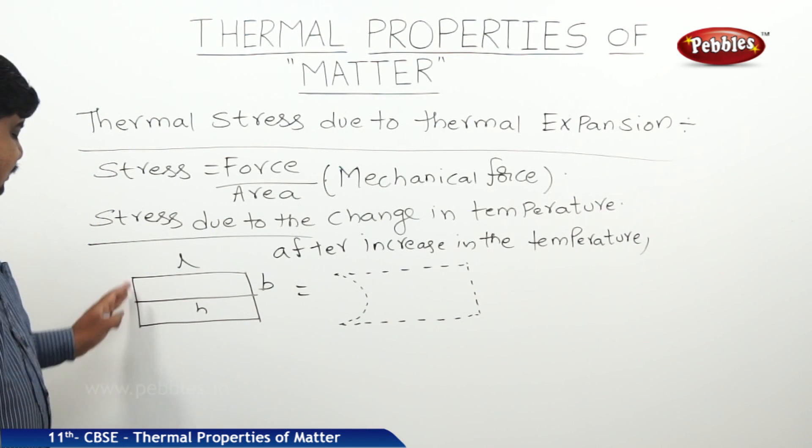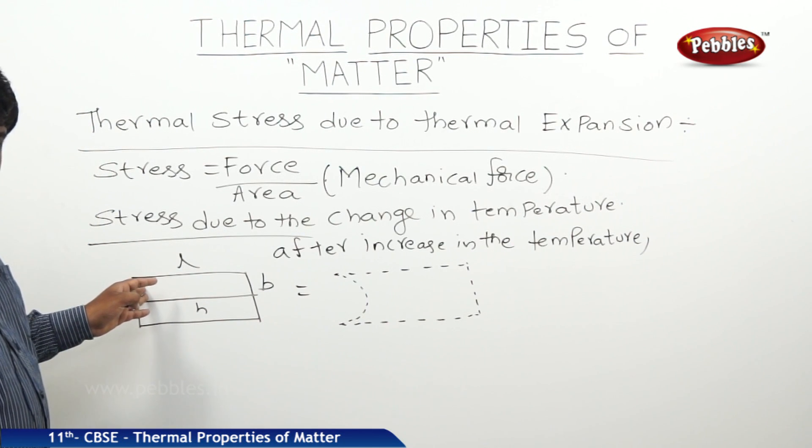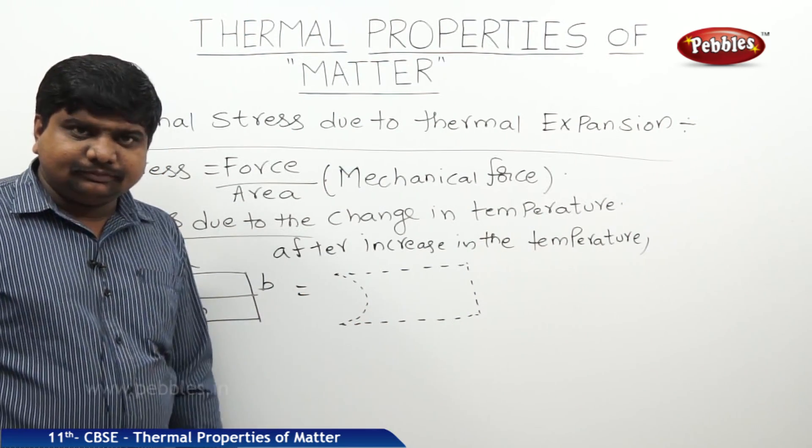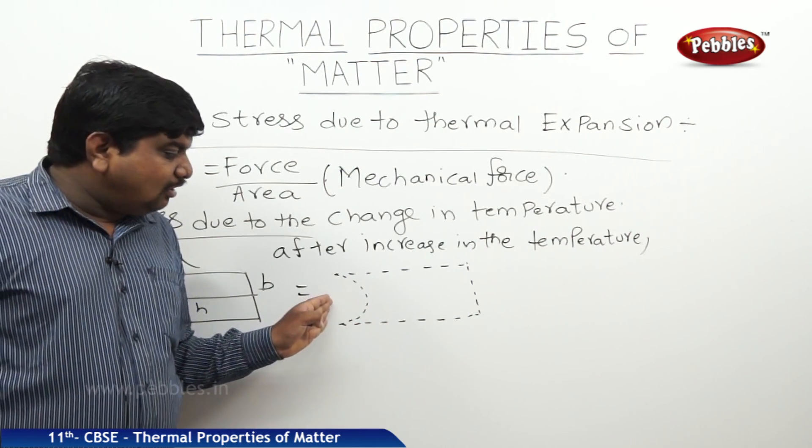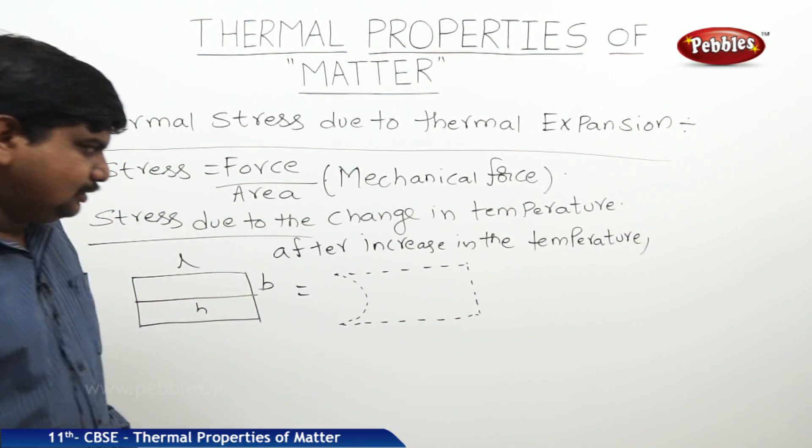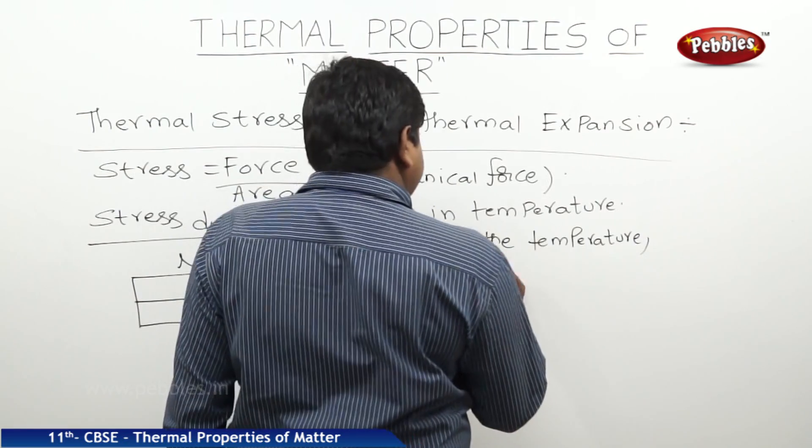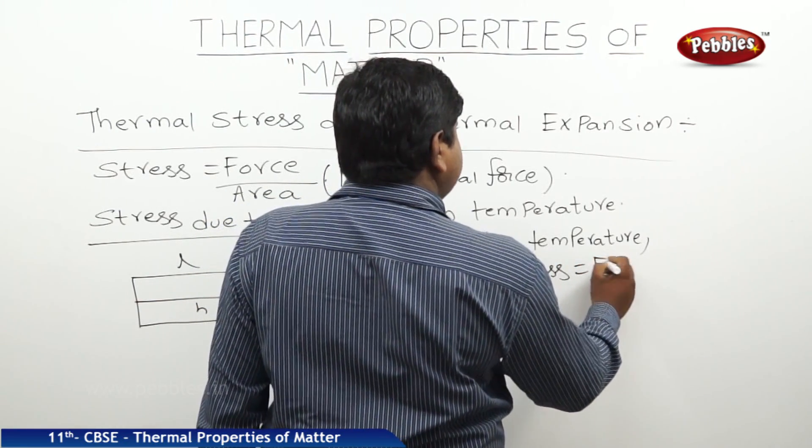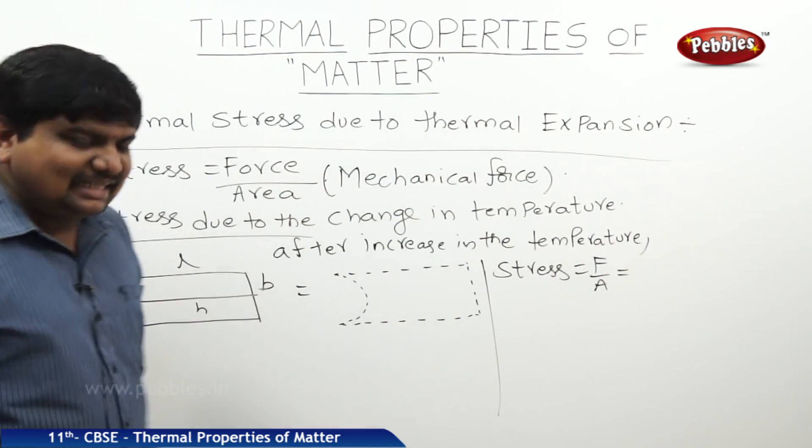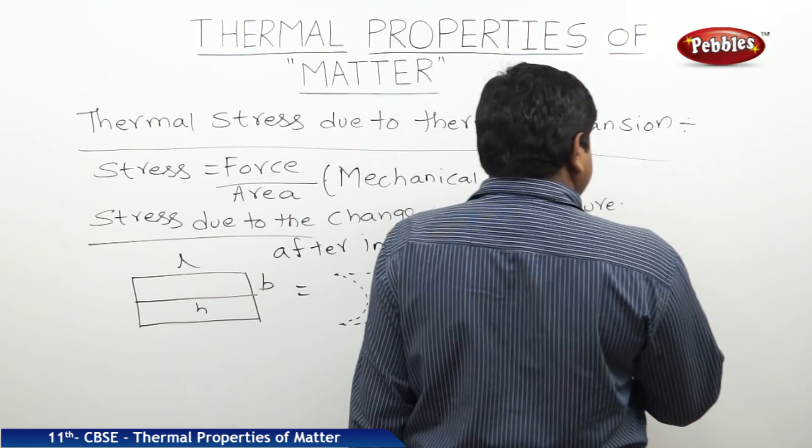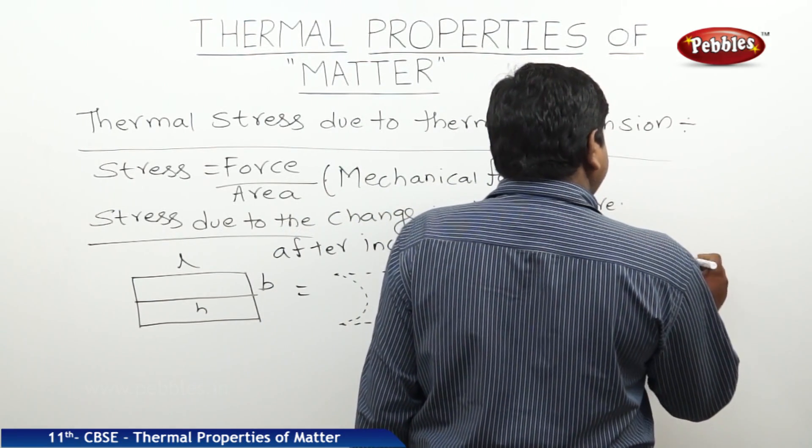What happened, the heat energy what we applied is done some work to deform the body. This deformation is always normal to the applied direction of the body. Therefore, we can write that stress is equal to force by area where the thermal stress is always normal to the original dimensions of the body. This is for normal force by area.